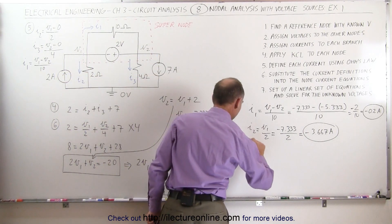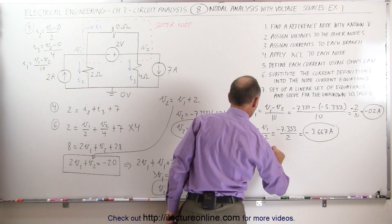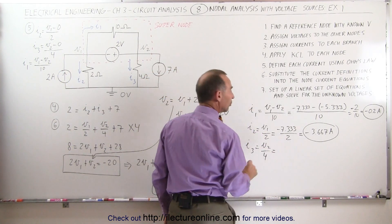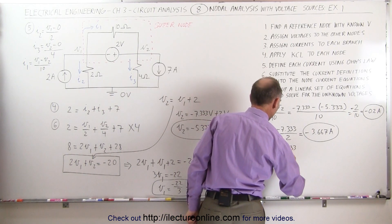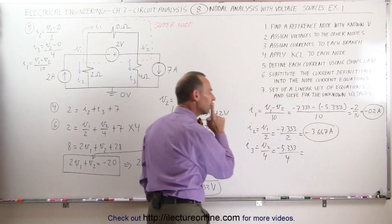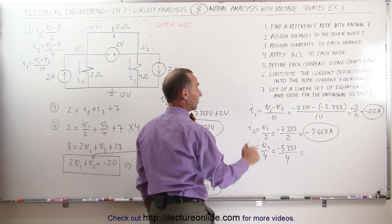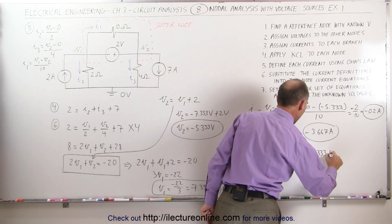Finally, I3 can be found by taking V sub 2 and dividing it by 4. V sub 2 is minus 5.333 volts divided by 4, which is minus 1.333 amps.